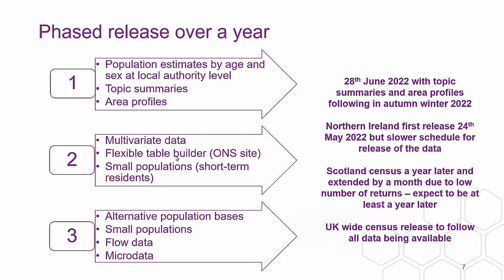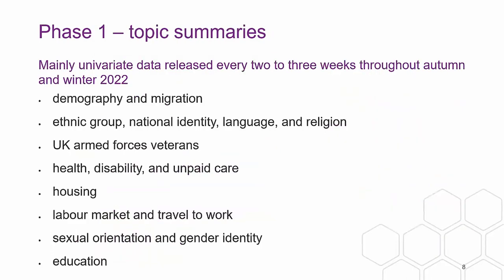Data releases are approximately every two to three weeks. The first set covers demography and migration, giving more detail about the population and demographic questions. Then a cluster covering ethnic group, national identity, language and religion. They've also brought forward UK Armed Forces veterans. Phase three is from spring 2023. Then there are sets of questions on health, disability and unpaid care, housing, labour market and travel to work, sexual orientation and gender identity, and education.